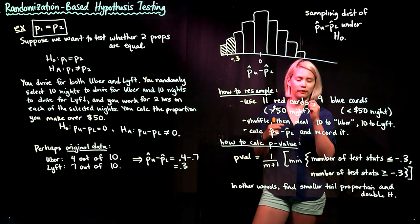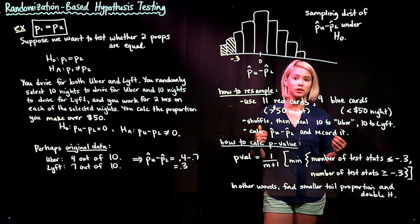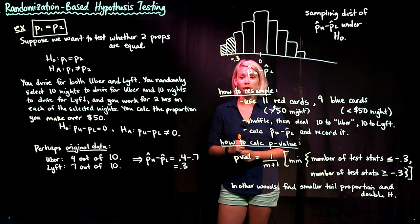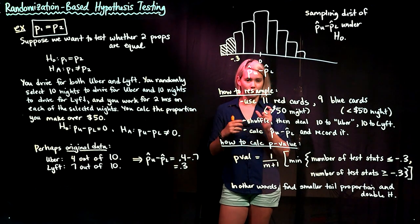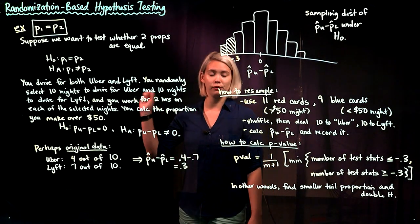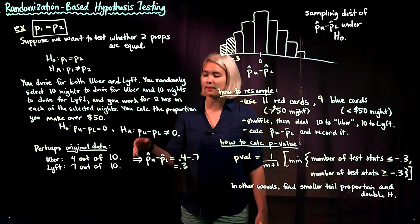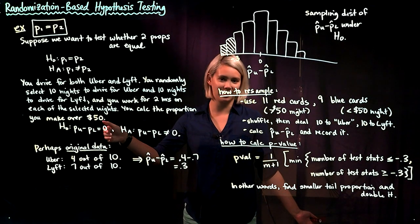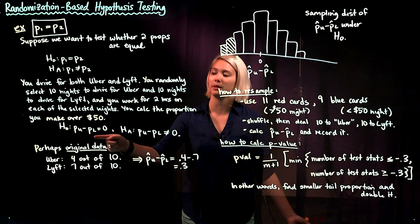Imagine that you always drive for two hours at a time, and you're wondering: in those two hours, what proportion of nights do I make more than $50 when driving for Uber versus Lyft? You randomly select 10 nights for Uber and 10 nights for Lyft. The null hypothesis is there's no difference — P Uber equals P Lyft, or P Uber minus P Lyft equals zero.